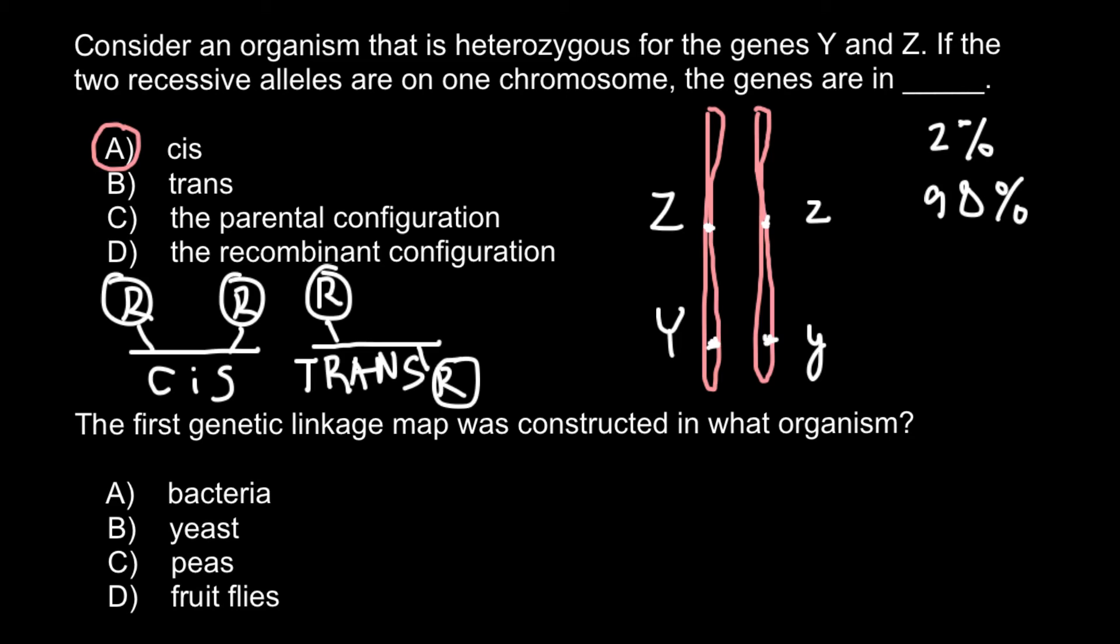Next question: The first genetic linkage map was constructed in what organism? Here are four answers to choose from: A. bacteria, B. yeast, C. peas, and D. fruit flies.